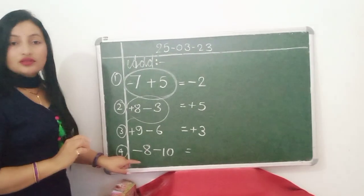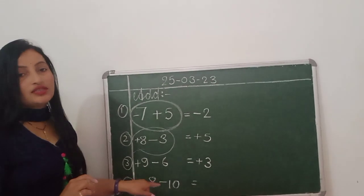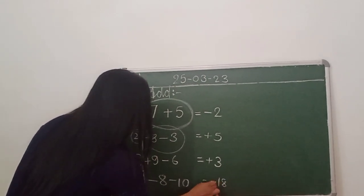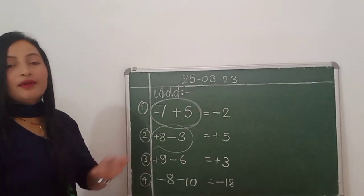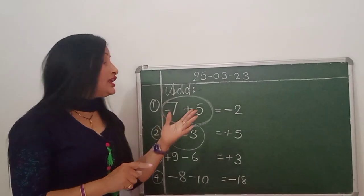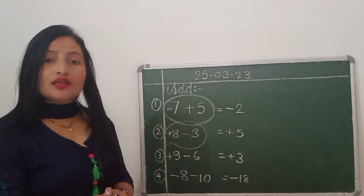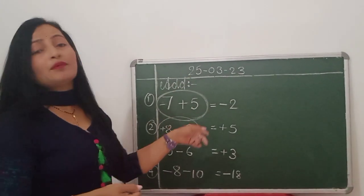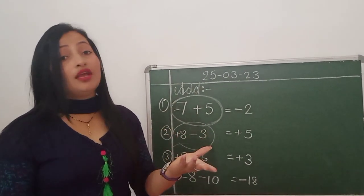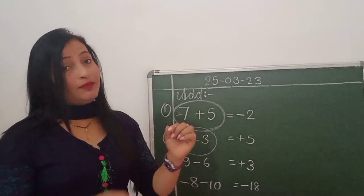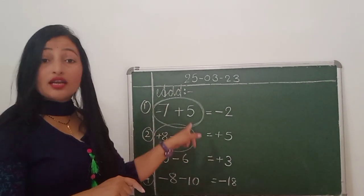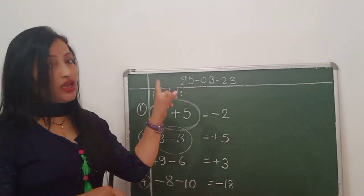Question number 4. See — sign दोनों का same है? Both signs are same — both are minus. So we add: 10 plus 8, we write 18 and sign will be minus. यह addition है — according to sign हमने subtract और add किया है. अपनी तरफ से minus का sign नहीं दिया — अगर मैं अपनी तरफ से minus का sign लिखूँ तो वो subtraction होगा. But यह addition है.